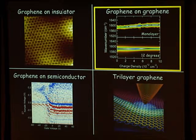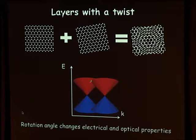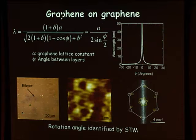Now I want to tell you about what happens when you put two graphene sheets on top of each other with a rotation between them — twisted bilayer graphene. Each sheet has its own Dirac cone, but because they're rotated, the cones are at different positions in reciprocal space. Where these cones interact, a new Van Hove singularity is created between the two sets of Dirac cones, with its energy depending on the rotation angle.